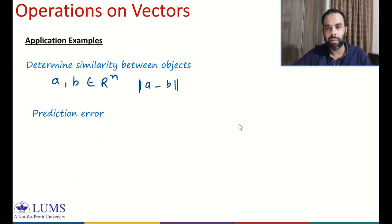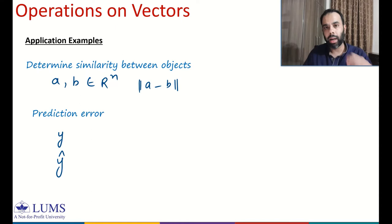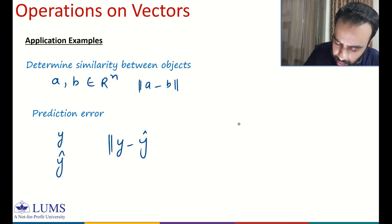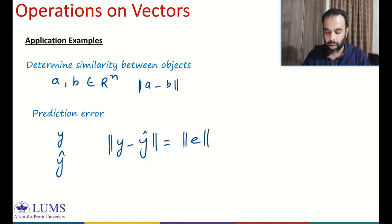Another application is prediction error. For example, we carry out prediction of sales or rainfall. In prediction, the true value is given by vector y and what you predict is y-hat. The difference between y and y-hat is the error. To convert into a scalar we take the norm, so norm of y minus y-hat is the error norm. This is one more example in which we use distance to quantify the error between the true value and predicted value.